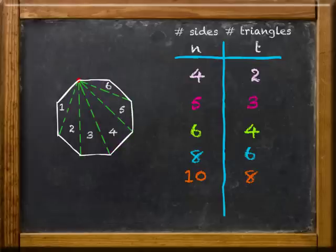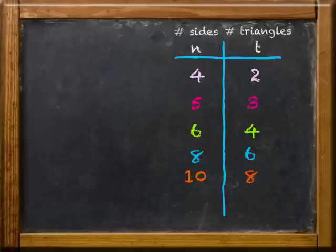So, looking at the table, can you come up with an algebraic expression for the number of triangles in an n-sided polygon? Could it be n minus two? Yep, that's it. The correct algebraic expression is n minus two.